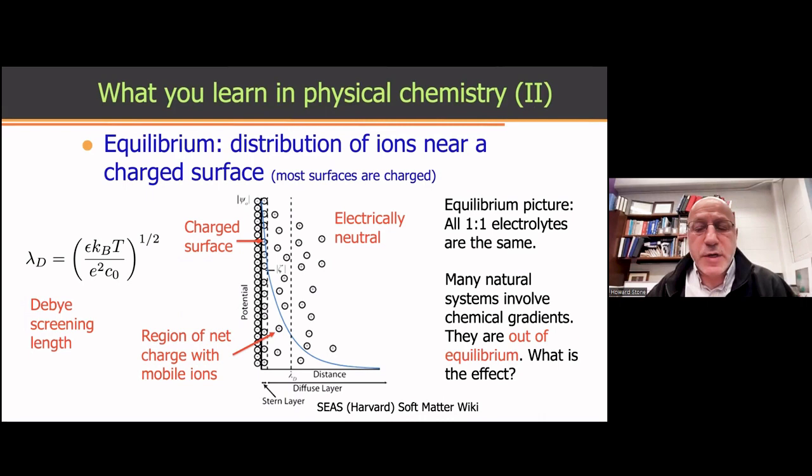And if you study this in books, what you'll learn is that you don't worry about the choice of the ion. Sodium ions and potassium ions and chlorine ions, they're all the same. So you'd learn in an equilibrium picture that all one-to-one electrolytes are identical. And what the rest of the talk is going to show you is that when you're not in equilibrium, when you have chemical gradients, then the choice of the salt can matter.